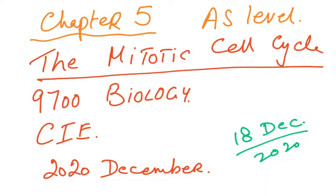It's the 18th of December 2020 and I'm recording the chapter 5 video. Chapter 5 is part of the AS level syllabus which is the mitotic cell cycle, and we're talking about 9700 the biology syllabus for CIE. We will start discussing the different stages of mitosis, beginning with what is a chromosome.